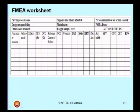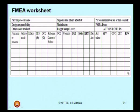Once relevant actions are taken, severity, occurrence, or detection may now change. For the changed severity, occurrence, and detection, find out the new RPN number, which is nothing but the product of these three. Compare the new RPN number with the old RPN numbers for every function or process being identified.